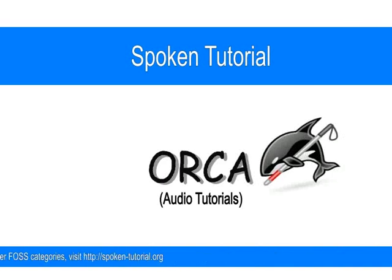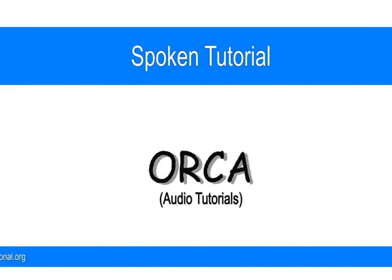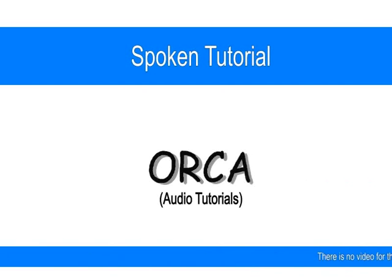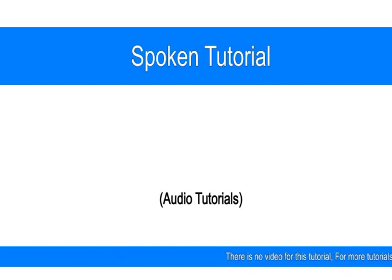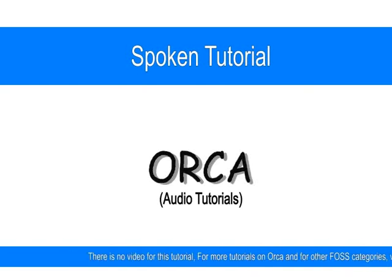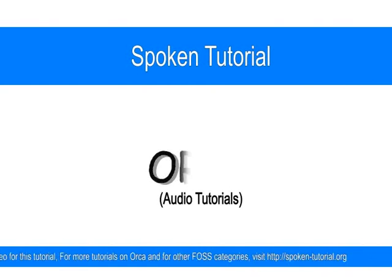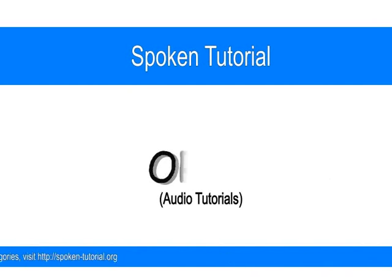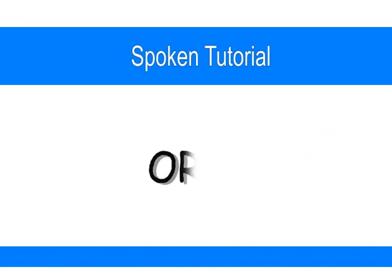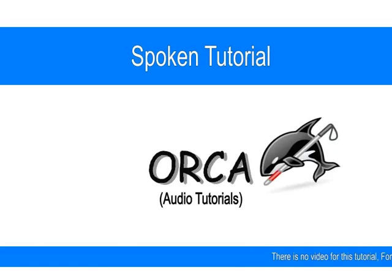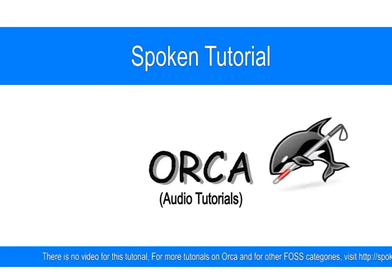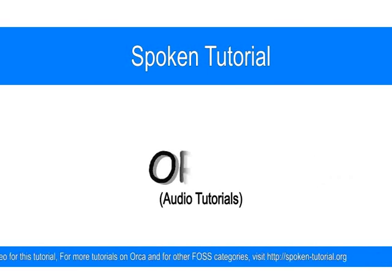Let's press Tab and find what Orca announces. Orca says: VNUX quick start type 3.1 link. By now you will be quite familiar with the Read All command — it's Numpad Plus on the desktop and Caps Lock plus semicolon on the laptop. So let's use the Read All command to know what is in this manual. Orca reads: VNUX quick start type 3.1 link, heading level 1.